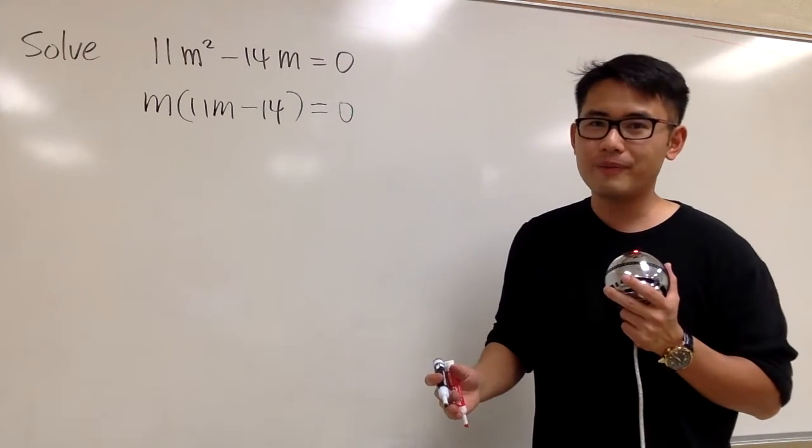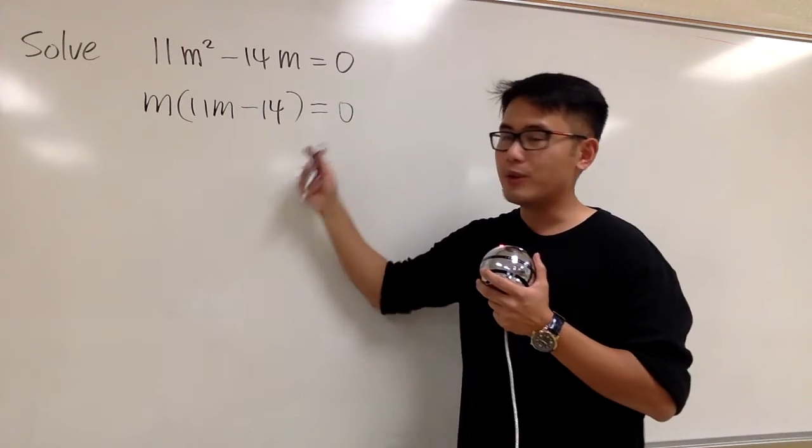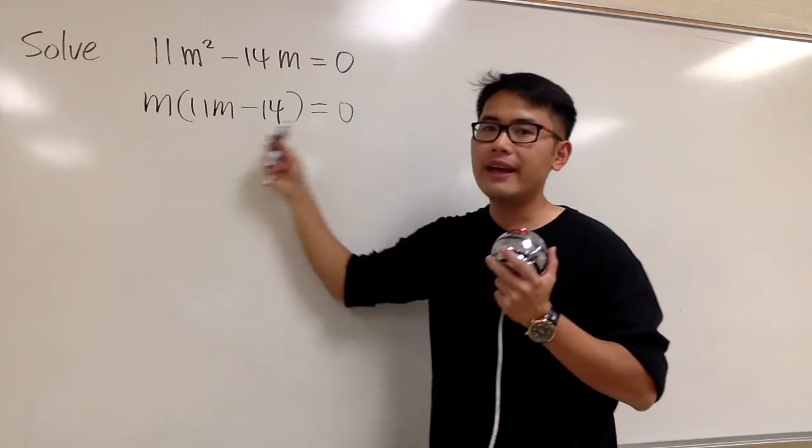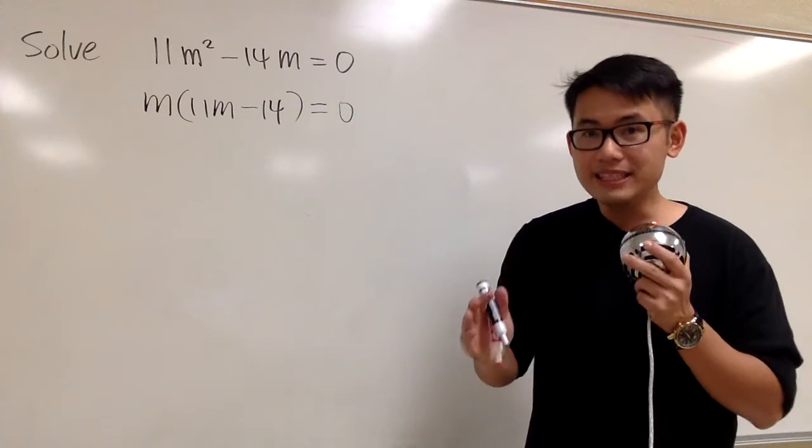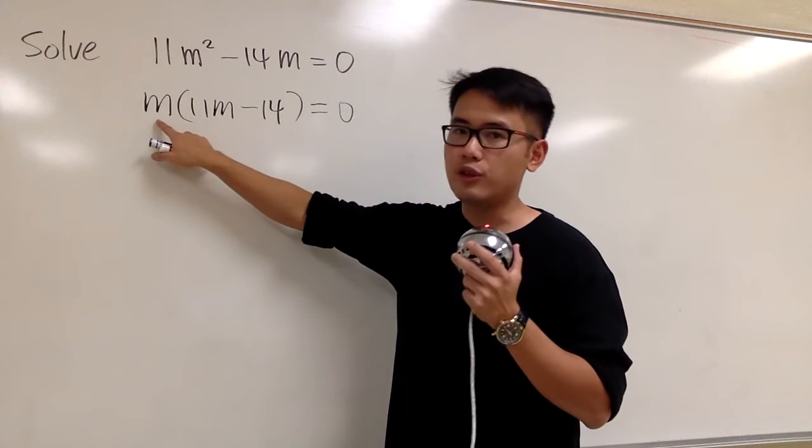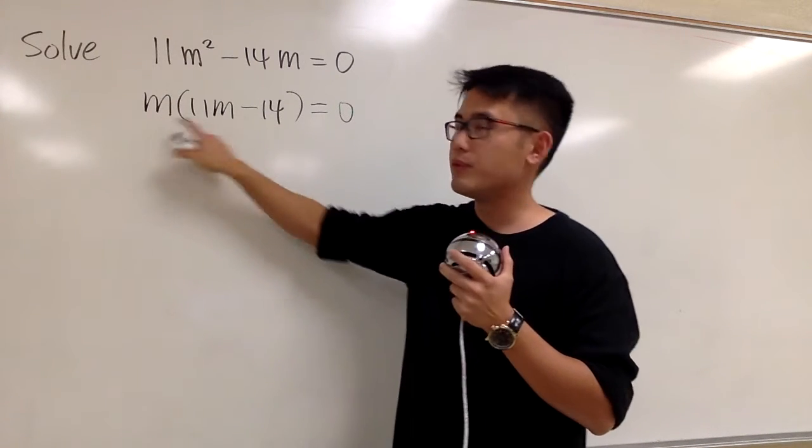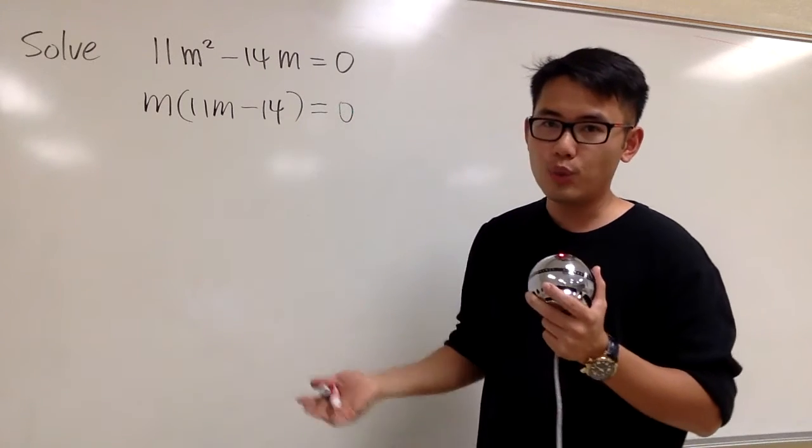We have to continue this right here. So, this is good. When we factor things out and the right-hand side is equal to 0, we can use the 0 product property. This means, I'm going to set each factor that has the m to be 0, and the other one to be 0 as well.